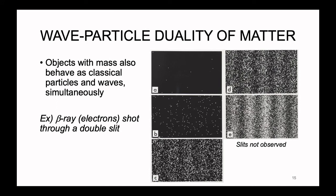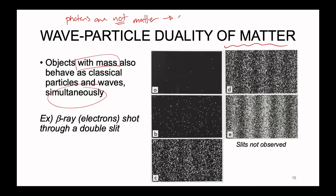As it turns out, matter does the same thing. There is also a wave-particle duality nature to matter as well — objects with a mass can also behave as classical particles and waves simultaneously. Here's an important distinction: photons, discovered by Einstein, are not matter. The reason why is that they are massless. On day one of class, we talked about the definition of matter — in order for something to be matter, it has to have mass and occupy space. Photons don't have mass, so they are not matter — they're just particles of energy.